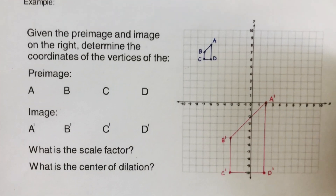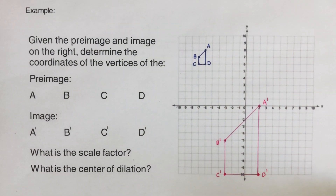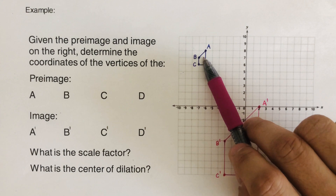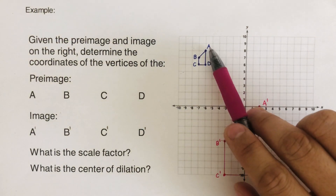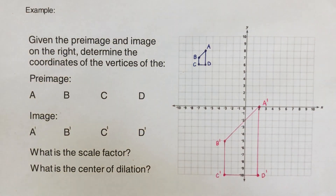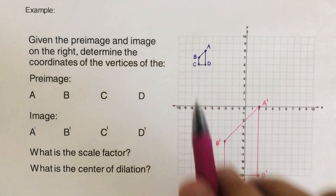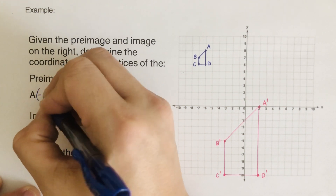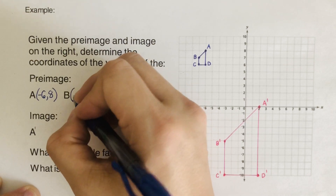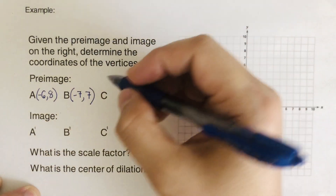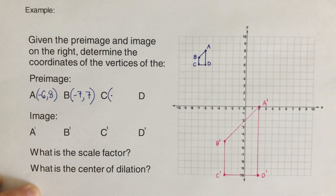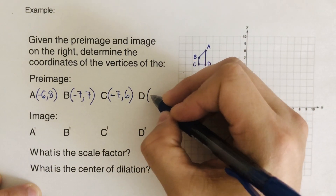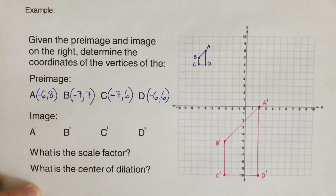Let's try another problem. The one without a prime is the pre-image, and the one with a prime is the image. Looking at this, the pre-image coordinates are: A(-6,8), B(-7,7), C(-7,6), and D(-6,6).